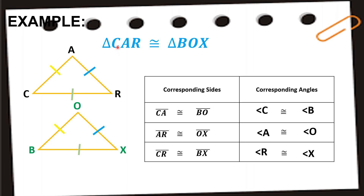Lastly, angle R is congruent to angle X. We can also read the correspondence directly from the given notation: triangle C-A-R ≅ triangle B-O-X tells us C↔B, A↔O, and R↔X, confirming the same positions.